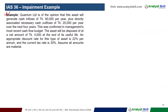Worked example: Quantum Limited expects an asset to generate cash inflows of $60,000 per year, with directly associated necessary cash outflows of $2,000. The asset will be disposed of for a net amount of $4,000 at the end of 4 years. The discount rate is 22% and tax is 30%. Calculate the value in use and fair value less cost of disposal.